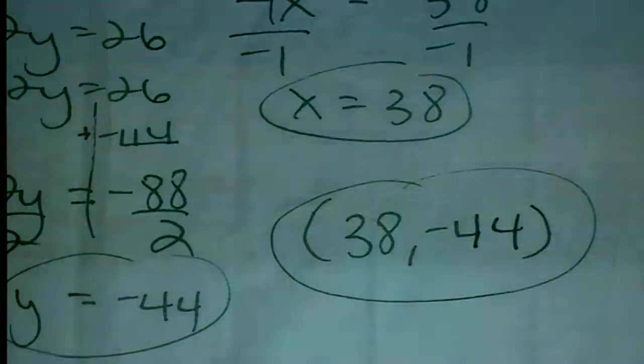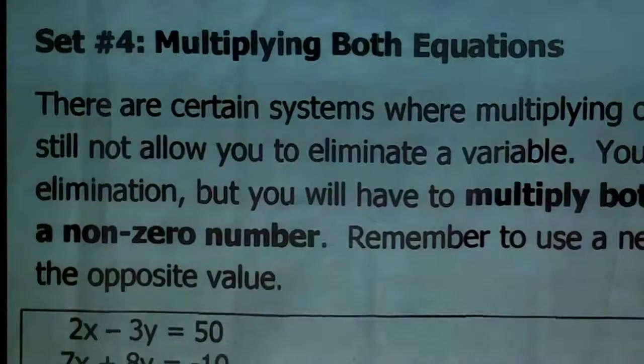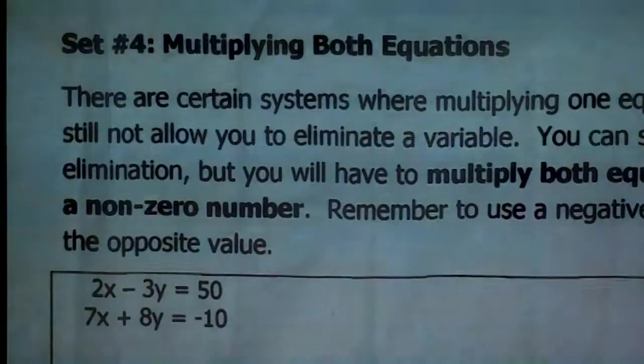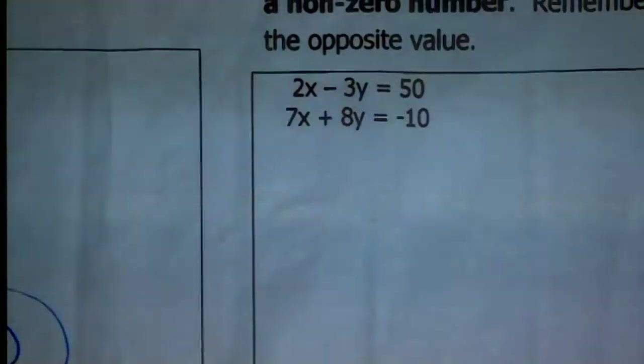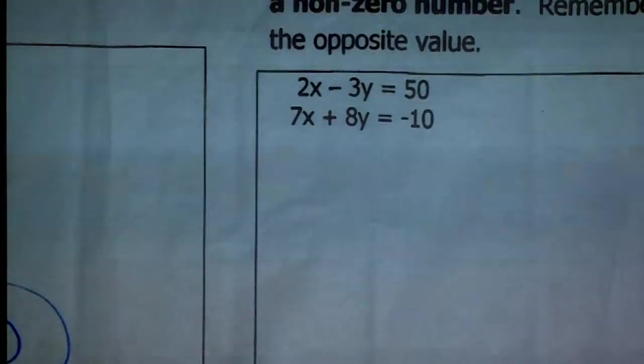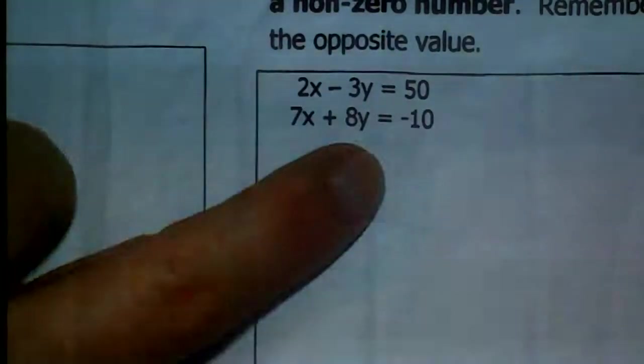We're in the home stretch — set number 4: multiplying both equations. In some systems, multiplying one equation won't let you eliminate the variable. You can still use elimination, but this time we multiply both equations by a non-zero number — a negative number if we need an opposite sign. Take a look: 2X minus 3Y equals 50 and 7X plus 8Y equals negative 10. The Y terms already have opposite signs, so I'll choose to eliminate Y. I'll multiply the first equation by 8 and the second by 3.